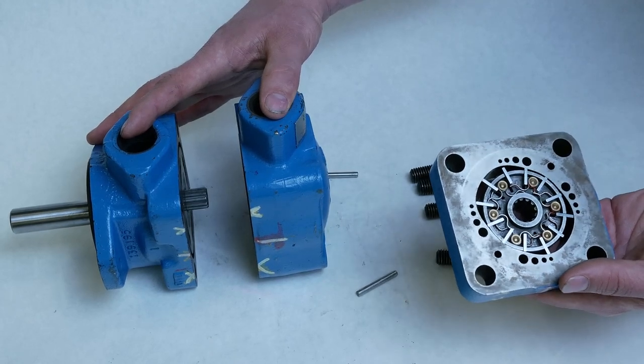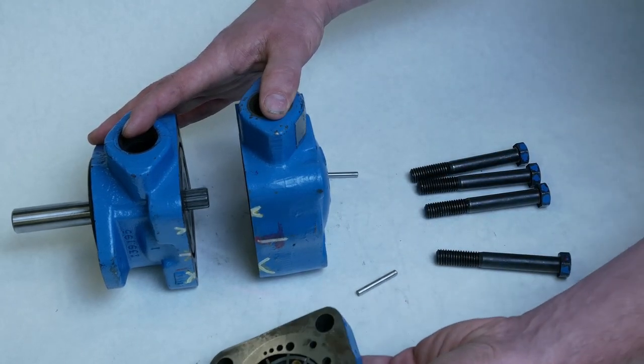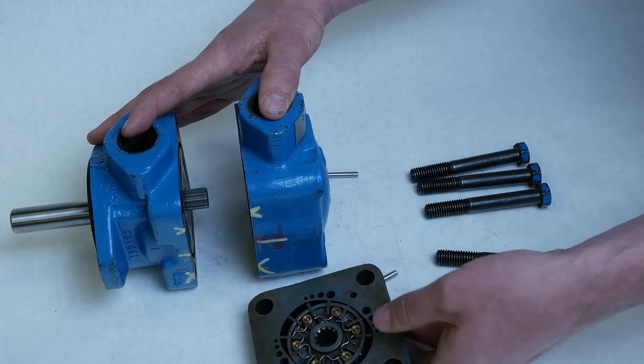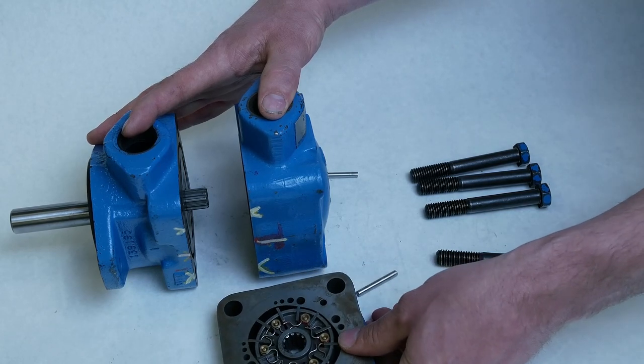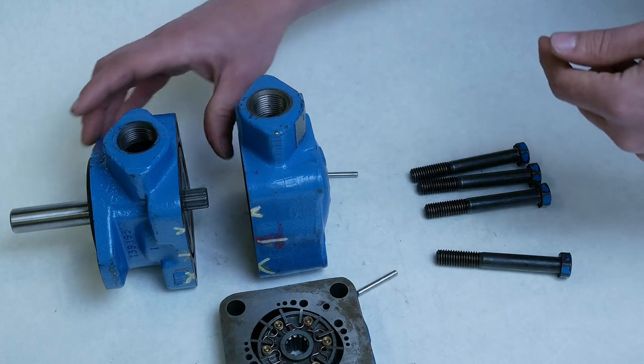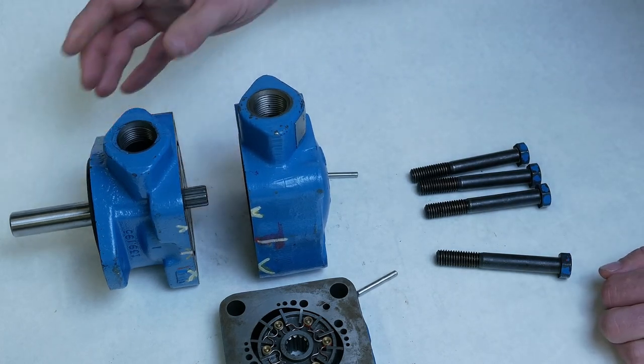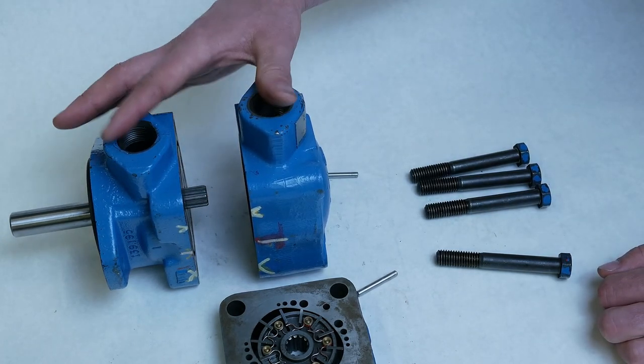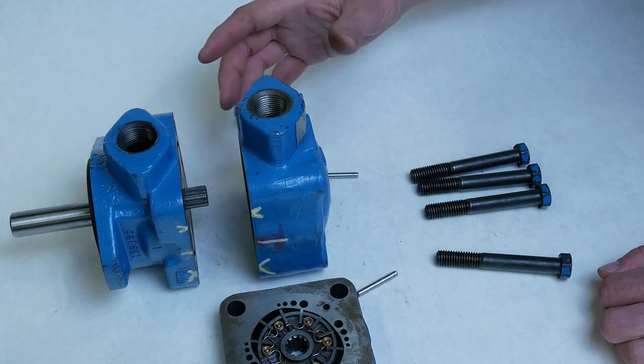Those would be the terms we would use for a pump because the in is going to be connected to the tank supplying the system and the out is going to go into the system creating the flow which is restricted. So our motors, typically our work ports are going to be called A and B.